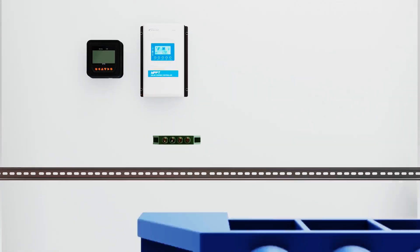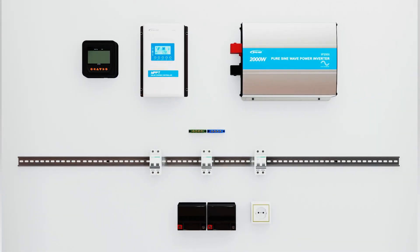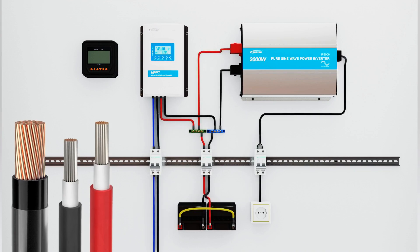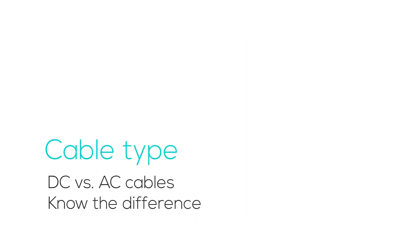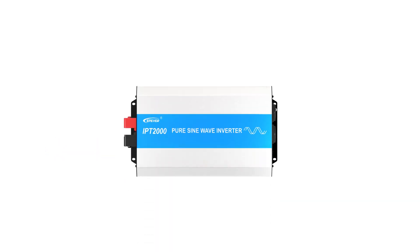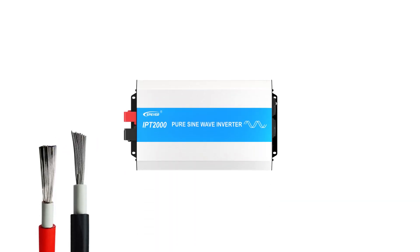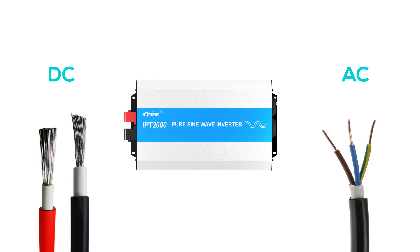Solar systems involve intricate components, each with a unique role — from the cables that transport power and connectors that bind them to the connection diagram. Today we journey through the technical details of EP ever off-grid inverter wiring, starting with cables. There are two main types: DC and AC, each designed differently and serving specific functions.